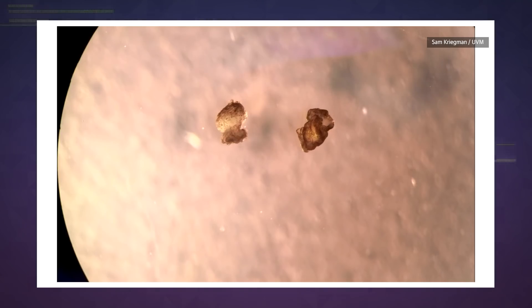The team knew they were onto something when they spotted xenobots appearing to cooperate, moving around in circles and pushing pellets into a central location. I say appearing to because these things are just skin and muscle. There is no gray matter here at all.